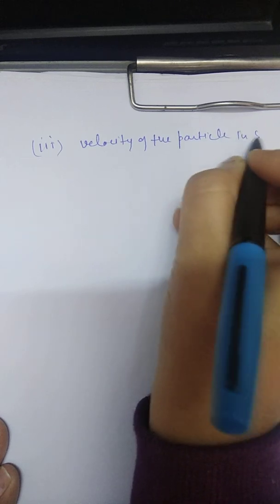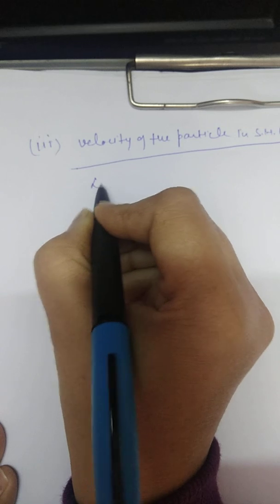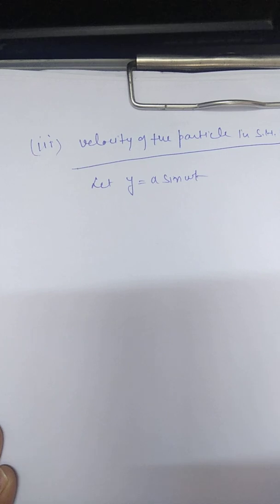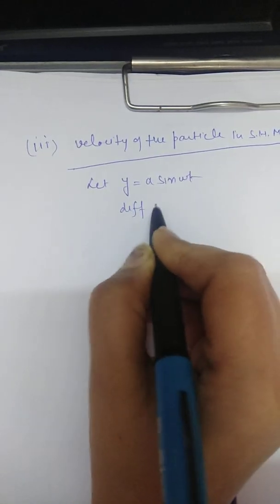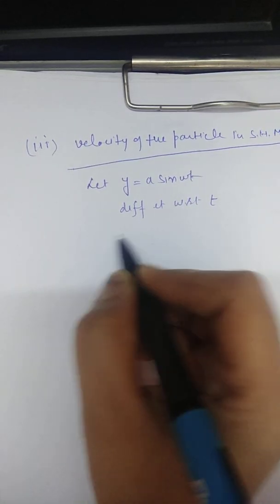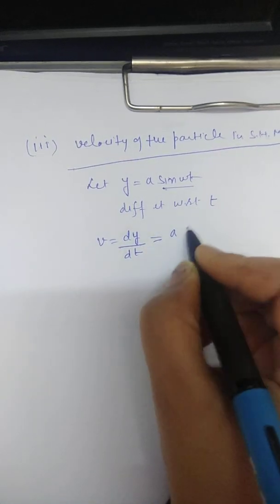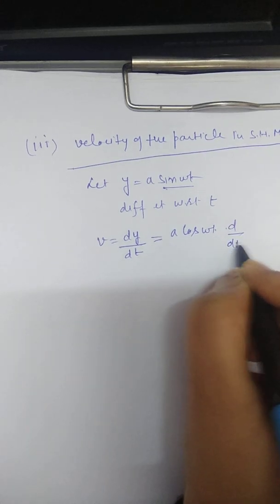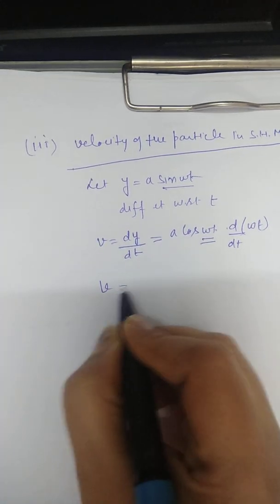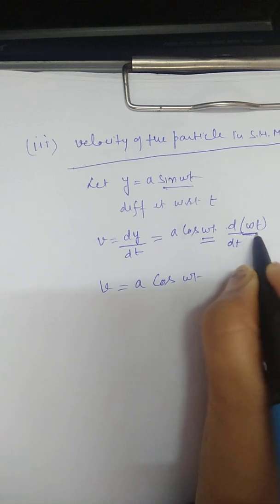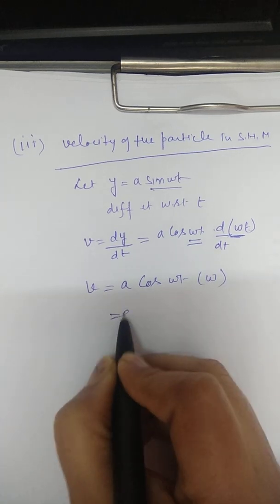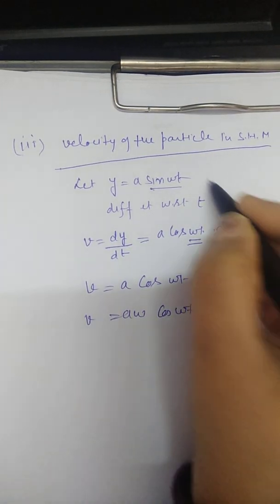The third characteristic is velocity. Let y equal A sin(ωt) be the displacement. Differentiating with respect to time, velocity v equals dy/dt equals A cos(ωt) times omega by the chain rule, so v equals Aω cos(ωt). This is equation number 1. We can also express this using the identity sin²(ωt) + cos²(ωt) = 1, giving cos(ωt) equals the square root of 1 minus sin²(ωt).